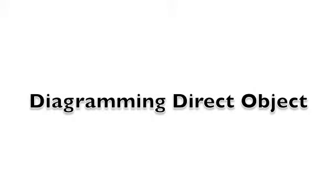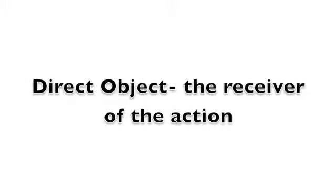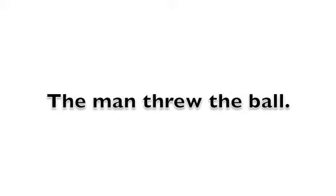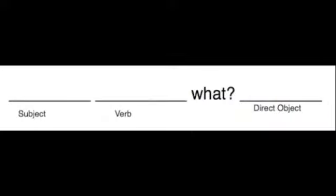Welcome to Diagramming Direct Objects. A direct object is the receiver of an action, as in 'the man threw the ball.' In our sentence, we know that the subject is 'the man' and the verb is 'threw.'